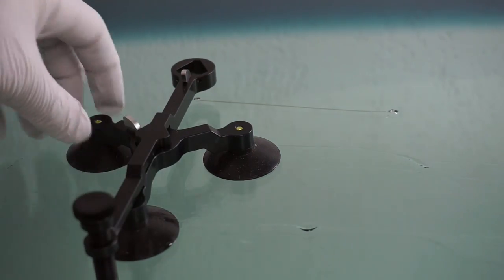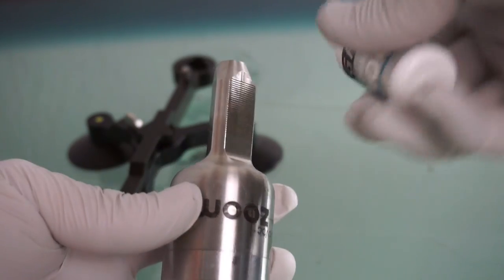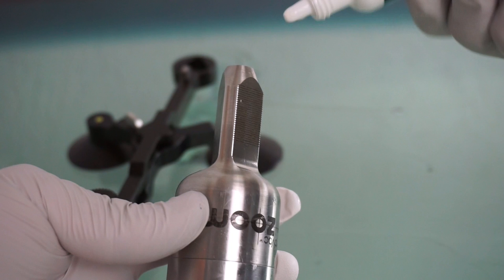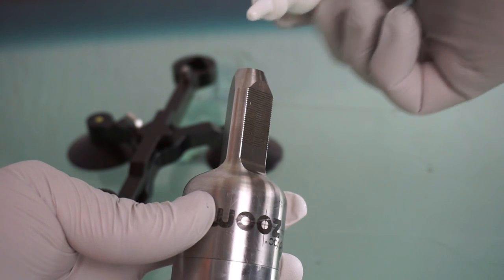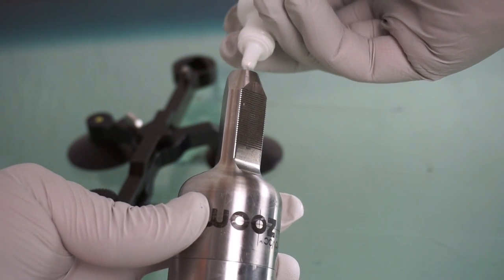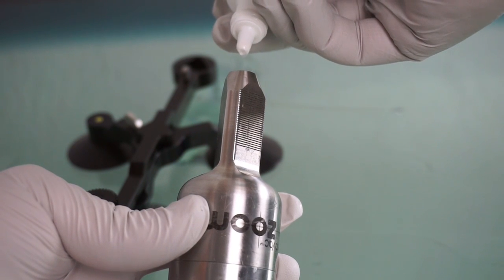Now load the injector with resin. Depending on the length of the crack, you may want to use between 7 and 12 drops of resin, and if it's a very long crack, you may need to stop and reload the injector with resin at some point.